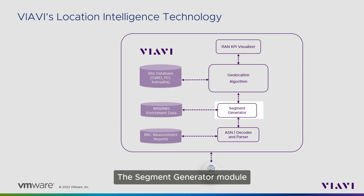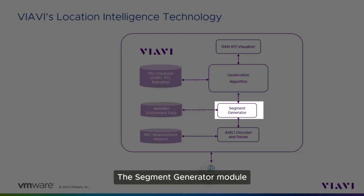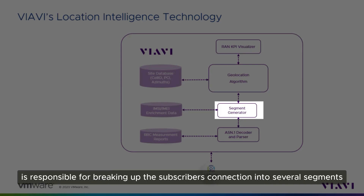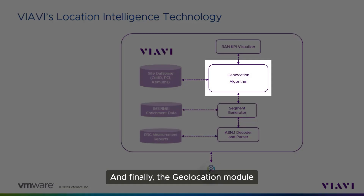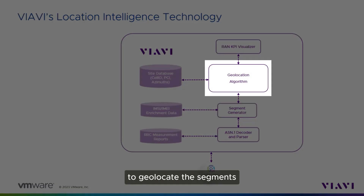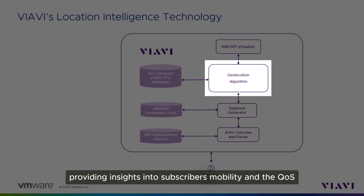The Segment Generator module is responsible for breaking up the subscriber's connection into several segments. And finally, the Geolocation module applies VIAVI's proprietary algorithm to geolocate the segments, providing insights into subscribers' mobility and QoS.